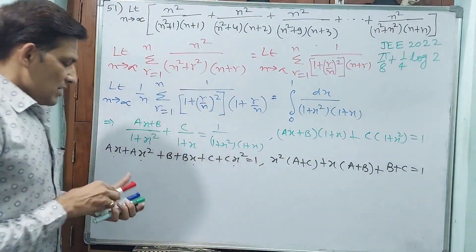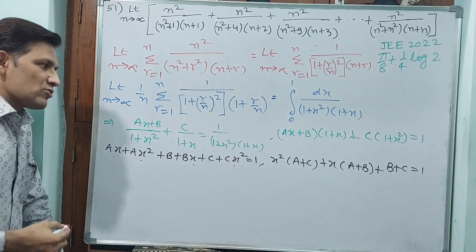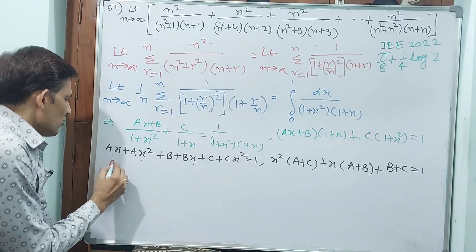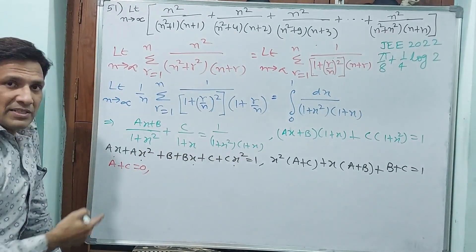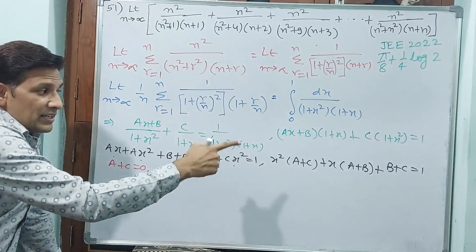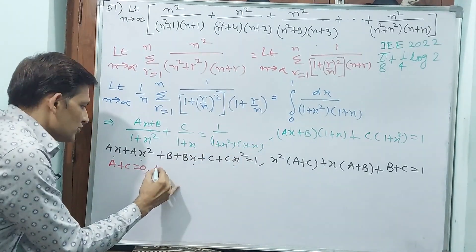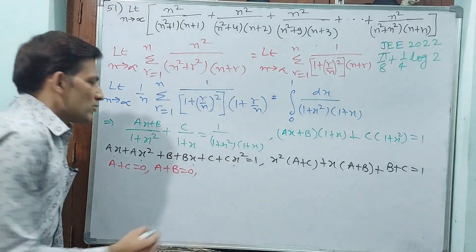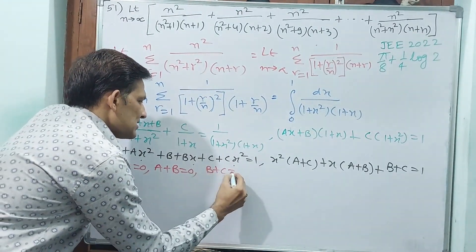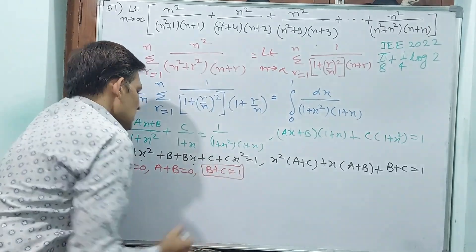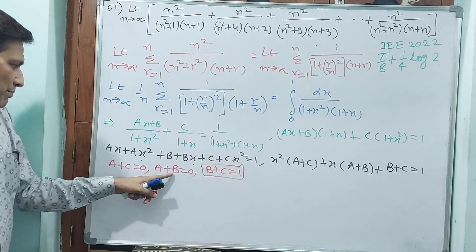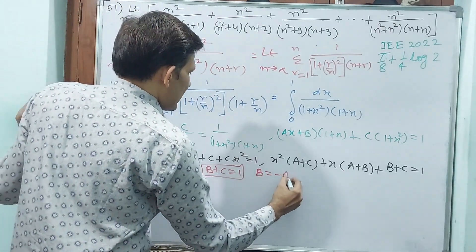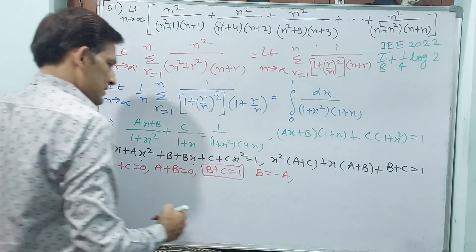RHS has only a constant — no x term or x squared term. So: a plus c equals 0, a plus b equals 0, and b plus c equals 1. From these: b equals minus a and c equals minus a.